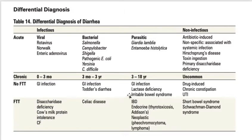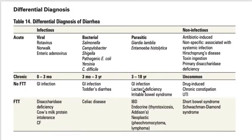Another cause is lactase deficiency. We all have an enzyme called lactase in our GIT, and milk contains lactose sugar. Lactase breaks down that sugar. When someone has a deficiency of lactase, they develop chronic watery diarrhea, sometimes with bloating and abdominal pain, associated with milk intake. Lactase deficiency can be primary — common in East Asians and Africans — or secondary, occurring after viral or bacterial infection, or in conditions like celiac disease or inflammatory bowel disease.